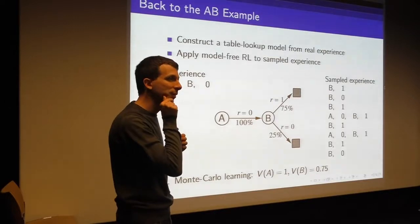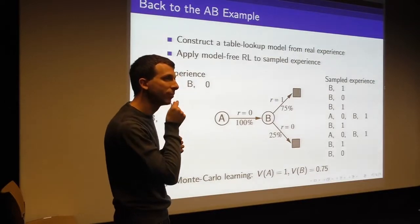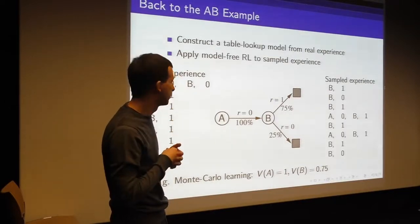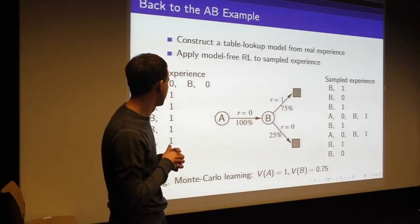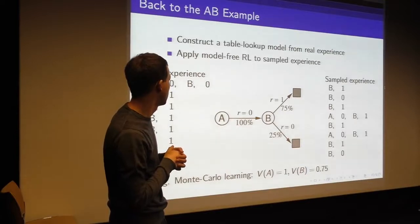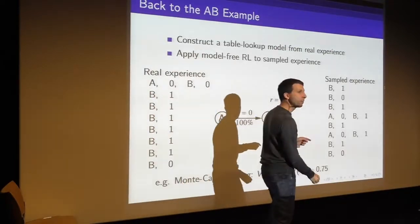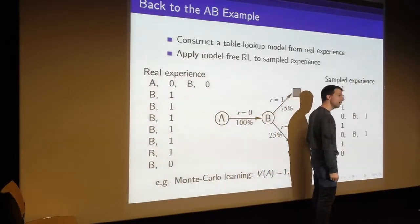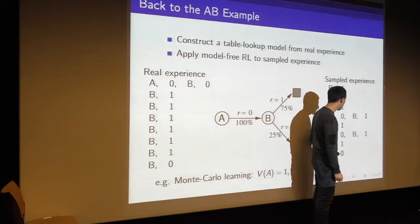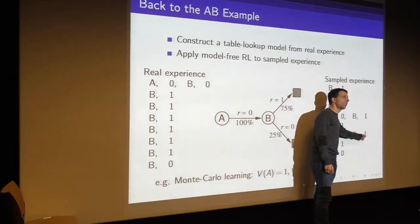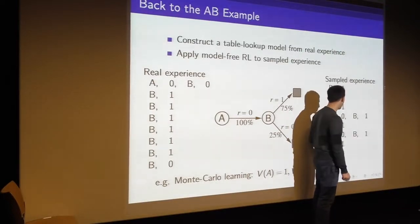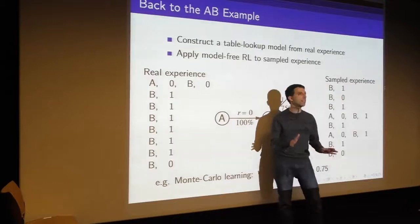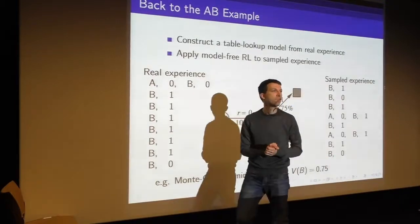How do we get V(A) equal to one, since we get zero reward from A? We're looking at the return with Monte Carlo learning. So you start in A — the whole return is what we're averaging over. The whole return is zero plus one, assuming this is undiscounted.